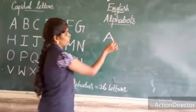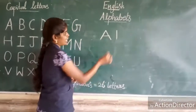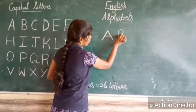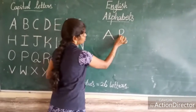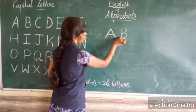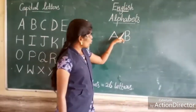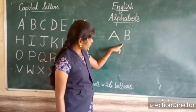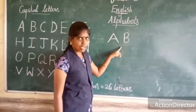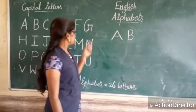And next, B. What is this? B. How to write B? One standing line. Curve — upward one curve and downward one curve. How to write B? One standing line, upward one curve, downward one curve. This is B.